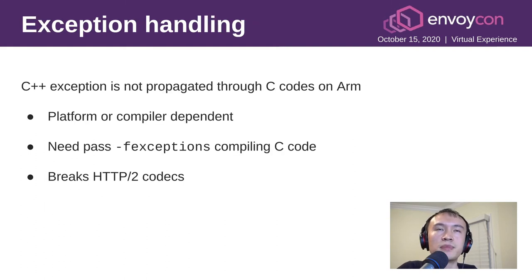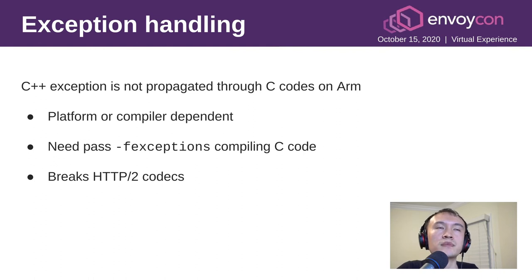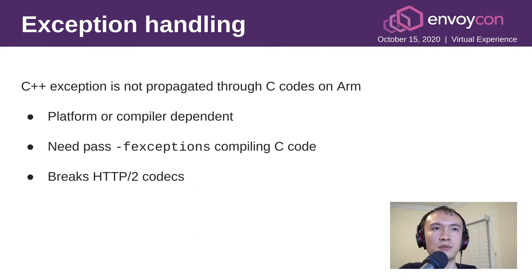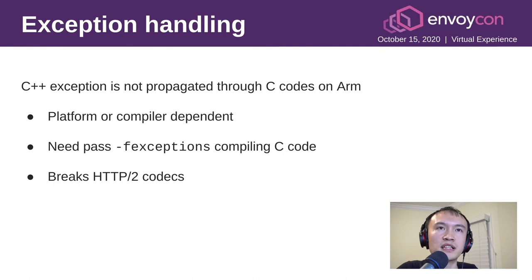The biggest issue we had to handle was exception handling. Initially when we started ARM builds, the build produced a binary, but about 100 out of 600 tests failed. This is because C++ exceptions are not propagated through C code on the ARM platform by default with Clang compilers. We needed to pass the `-fexceptions` flag when compiling C code. This was very important because our HTTP codecs depend on this behavior. We're on the path to remove exceptions from the HTTP/2 codec, but that was still an issue at that moment.